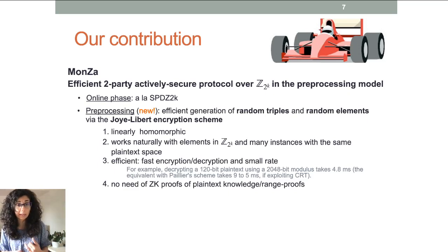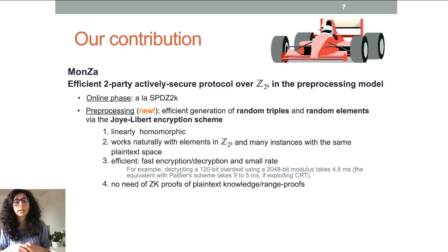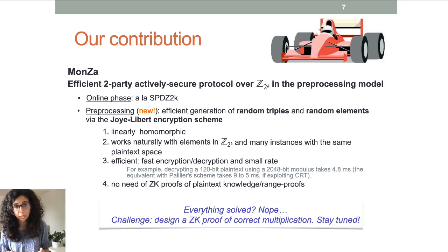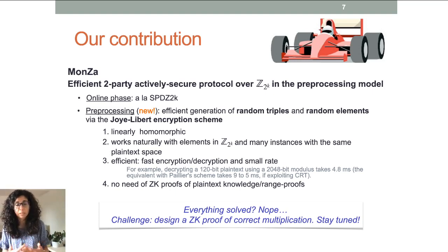The Joye-Libert scheme is well suited because it is linearly homomorphic and naturally supports as its message space the ring we are interested in. It is quite efficient — basic operations like encryption, decryption, and homomorphic operations are really fast. Moreover, it does not need zero-knowledge proofs of plaintext knowledge. However, it still needs zero-knowledge proofs for ciphertext multiplication, and such proofs were not known in the literature before this work. So the challenge was to design this specific protocol.